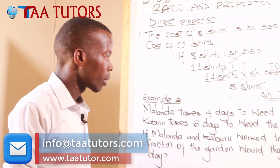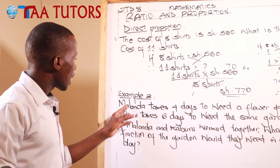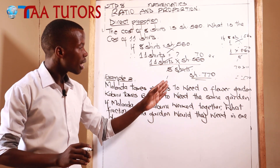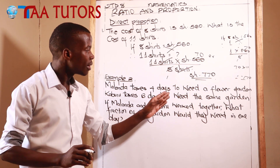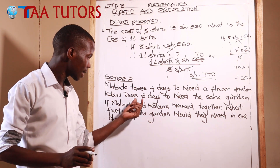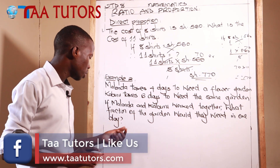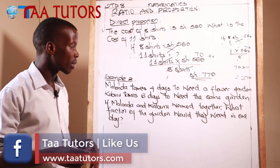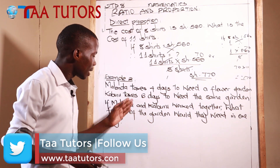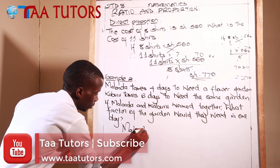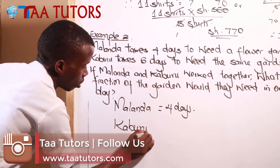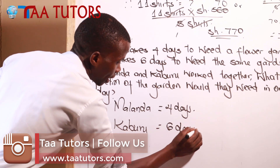Example two — be very keen. Malanda takes four days to weed a flower garden. Kaburu takes six days to weed the same garden. We have two people weeding: Malanda who takes four days, and Kaburu who takes six days. If Malanda and Kaburu work together in the same garden, what fraction of the garden will they weed in one day?